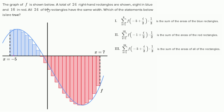The graph of f is shown below. A total of 24 right-hand rectangles are shown. So what do we mean by right-hand rectangles? There are clearly 24 rectangles you can count. And right-hand rectangle means that for each of these rectangles, the height is defined by the value of the function on the right-hand side of the rectangle.